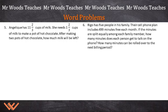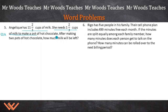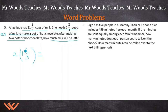Last few are word problems. When you enter sixth grade and go into higher grades, there will be many more multi-step word problems. Angelique has 11 and two-thirds cups of milk. She needs 1 and two-thirds cups of milk to make a pot of hot chocolate. After making two pots, how much milk will be left? She has 11 and two-thirds cups. For each pot, she uses 1 and two-thirds cups, so we need to find 2 times 1 and two-thirds.